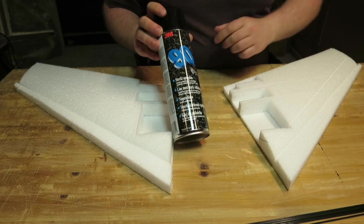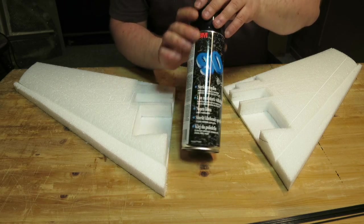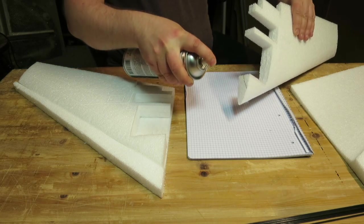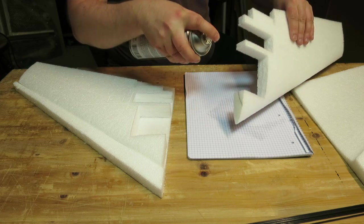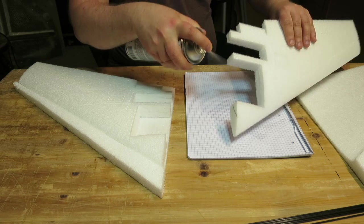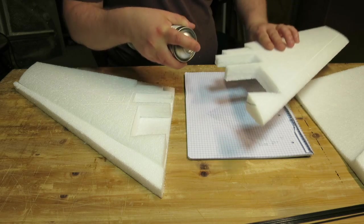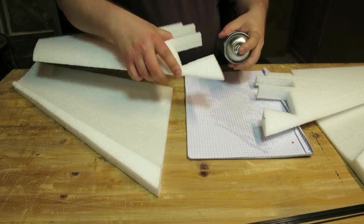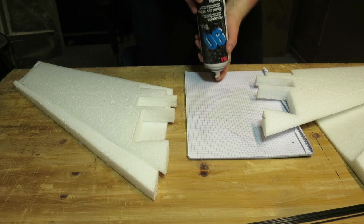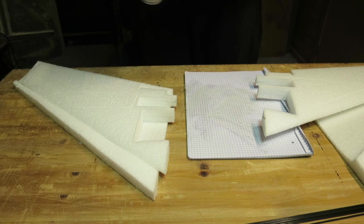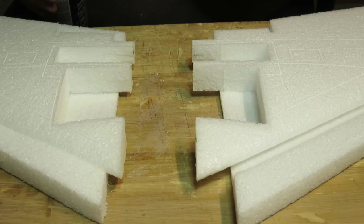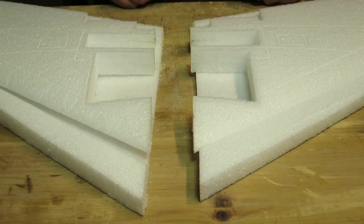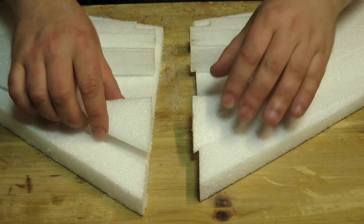To glue these two wing halves together I'm using the 3M90. It's the strongest of the contact adhesives on spray. Since this is a contact adhesive, these surfaces need to get tacky before I put them together. With 3M90 they've become tacky enough, so now I will join the surfaces.